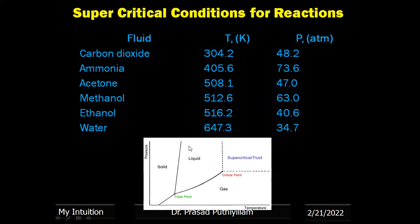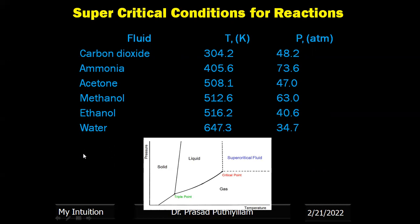The supercritical fluid temperature and pressure conditions of some common solvents are: carbon dioxide at 304.2 K and 48.2 atm; ammonia, acetone, methanol, ethanol, and water are also listed, with water at 647.3 K and 34.7 atm. Carbon dioxide's relatively low temperature and pressure requirements make it very useful for supercritical reactions.